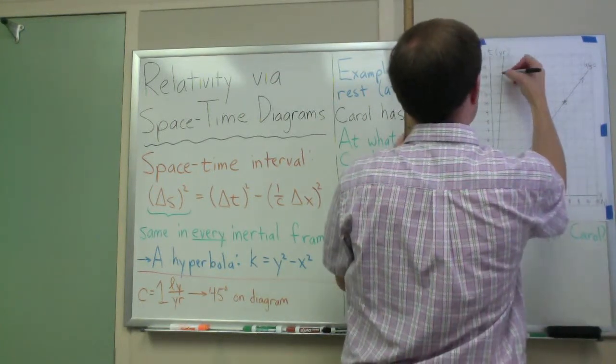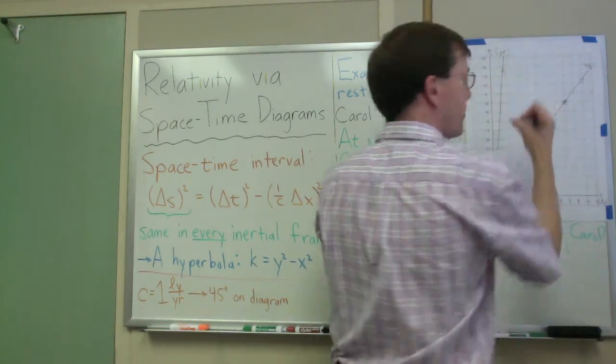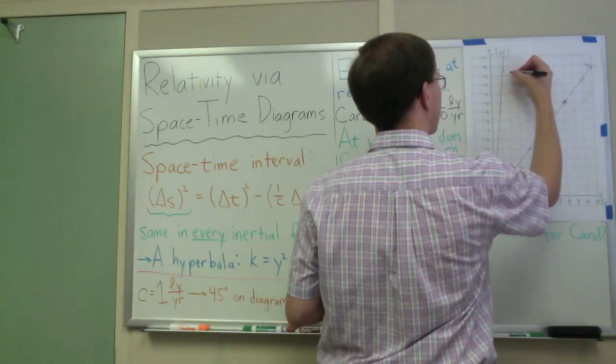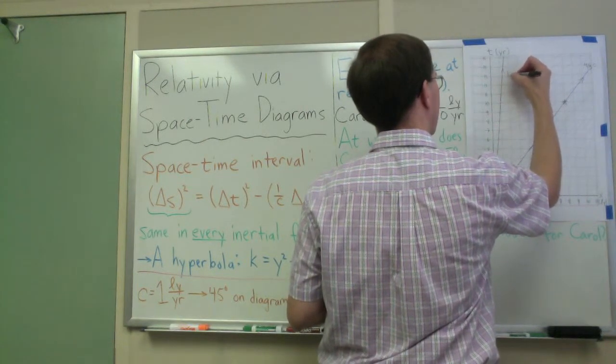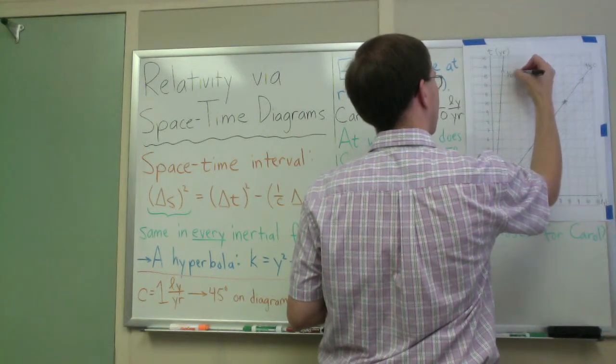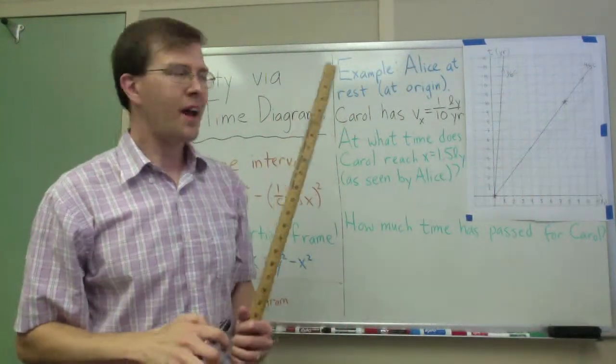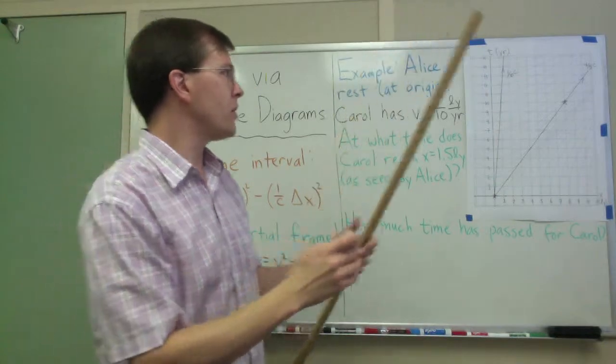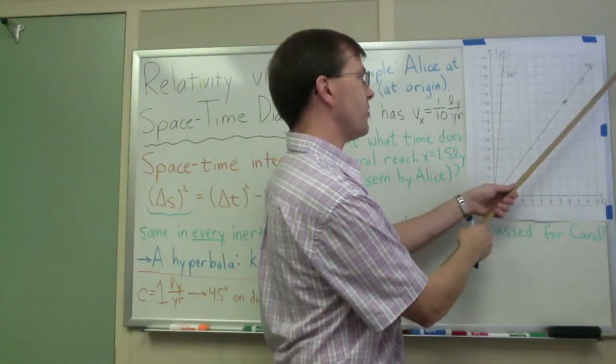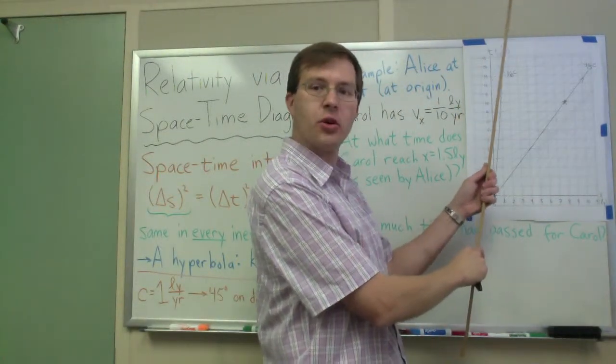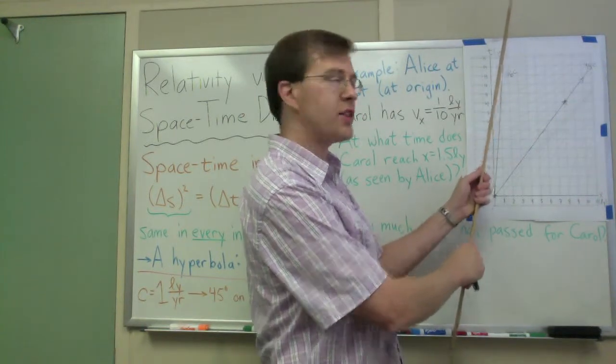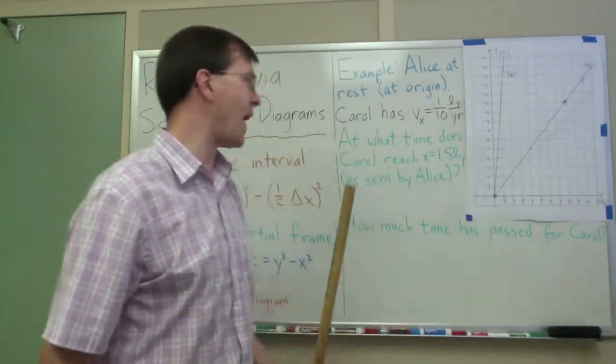Okay, so that is my path for Carol. I'll label it as one-tenth times the speed of light. Notice what we have going on here. Carol is moving much slower than the speed of light, so her path is closer to vertical than that four-fifths C path was over there. Her path is pretty close to vertical. There's Carol's path.